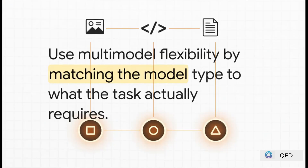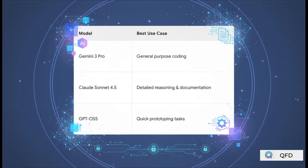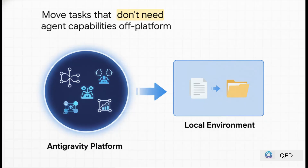For the last strategy, it's all about using the right tool for the job. Antigravity actually gives you access to a few different AIs — you just have to use them where they shine. And don't forget to offload anything that doesn't need Antigravity's special skills to your local machine.